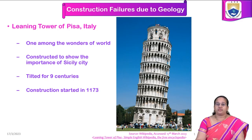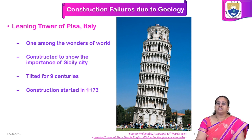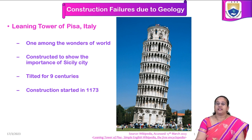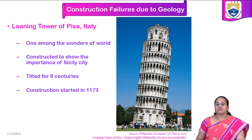One among them is the Leaning Tower of Pisa, which is in Italy. This is one of the most important and very popular constructions that is a part of the wonders of the world. It is constructed to show the importance of Sicily City in Italy. This construction is one of the marvels that has been standing for the last nine decades, basically constructed in 1173 and still standing with the same tilt. So this is one of the construction failures or geotechnical failures observed in the construction industry.